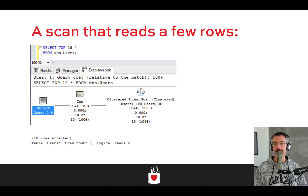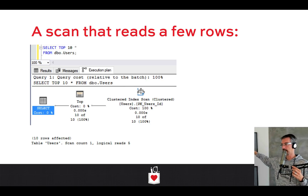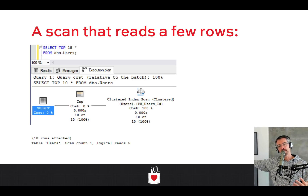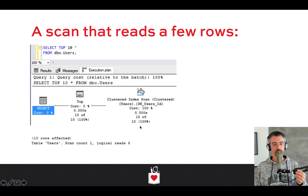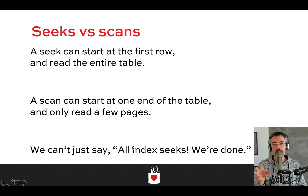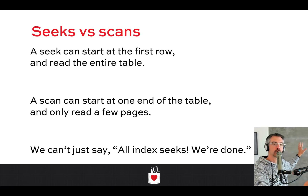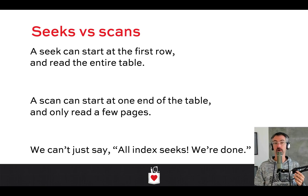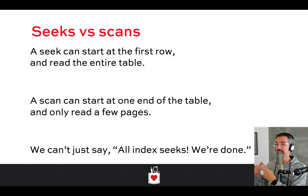An example of a great scan: SELECT TOP 10 star FROM users with no WHERE clause. SQL Server grabs the first page and starts reading users until it has 10, then it's done. It's technically a scan because it starts at one end, but it only reads 10 rows and does five logical reads. Your goal isn't to look at an execution plan and see 'seek, seek, seek' and call it done — there are terrible seeks and awesome scans. You have to look at how many rows each operation reads versus how many it returns.